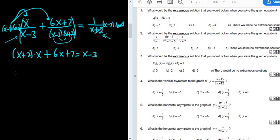Let's go ahead and distribute. So we get x squared plus 2x plus 6x plus 7, and that's equal to x minus 3. Let's combine like terms. So the 2x and the 6x will give us 8x. So x squared plus 8x plus 7, and that's equal to x minus 3.